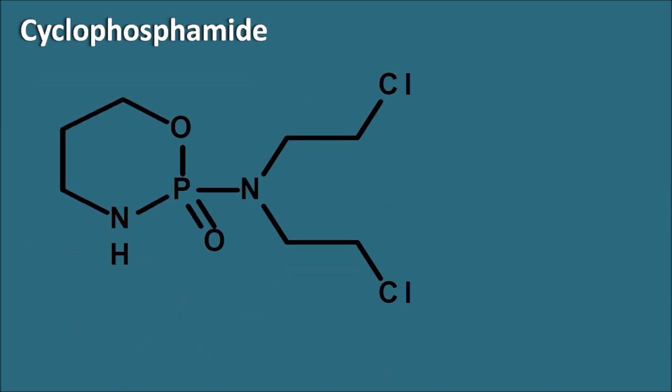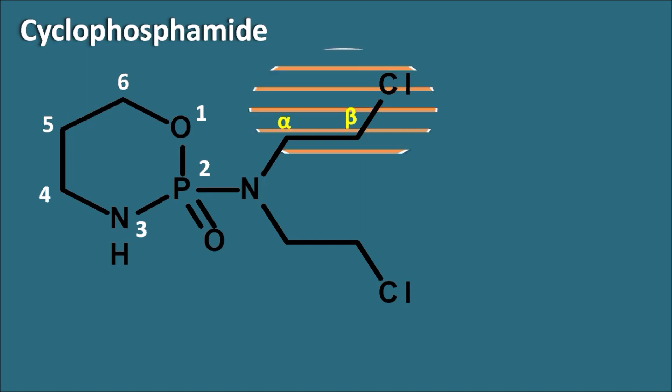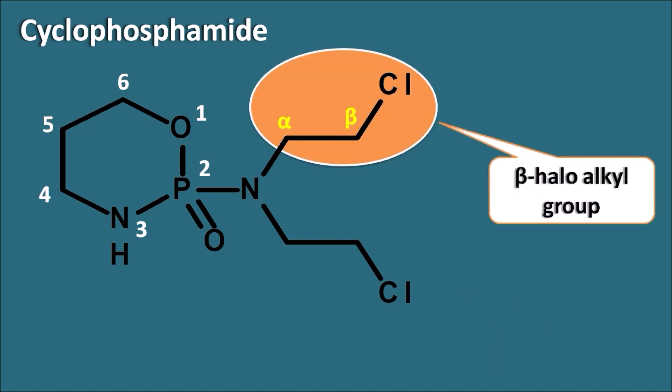Cyclophosphamide has a structure containing three heteroatoms: oxygen, phosphorus, and nitrogen. We give preference to oxygen and start numbering from it: one, two, three, four, five, and six. It also has a side chain attached to the nitrogen with an alpha carbon and beta carbon — a beta-haloalkyl group which is responsible for the alkylation of the DNA.